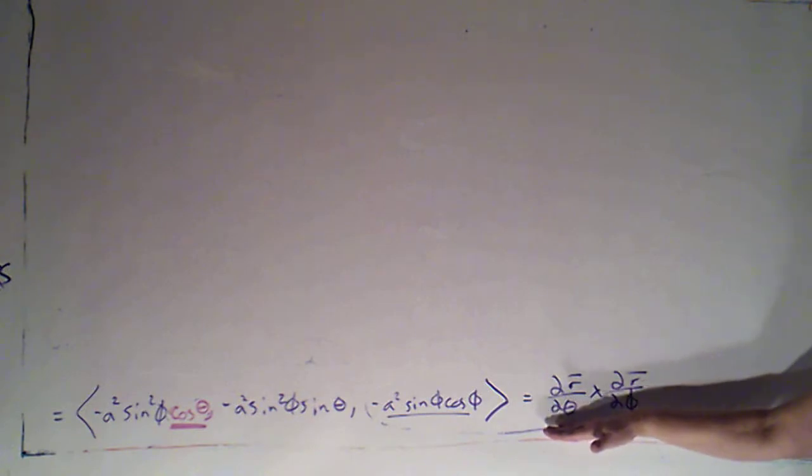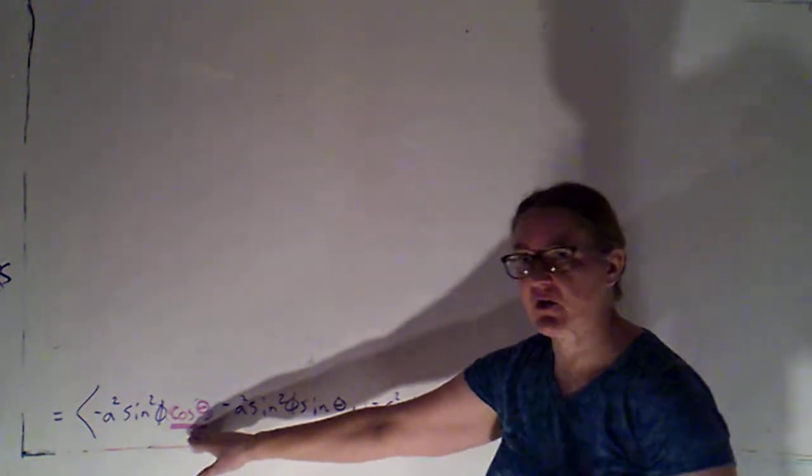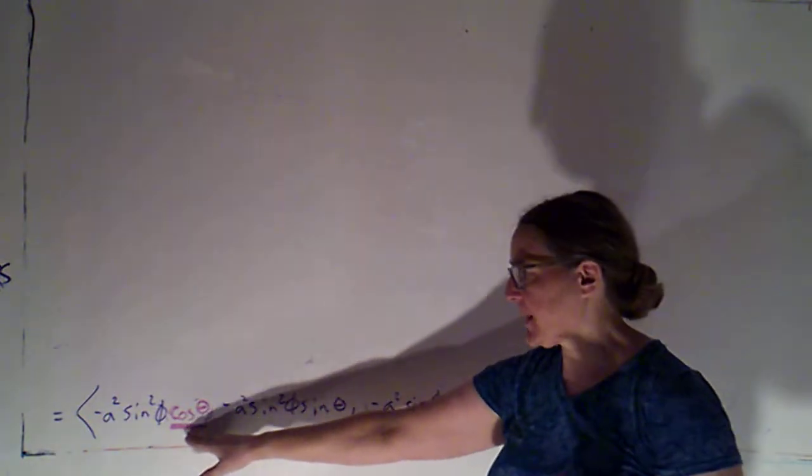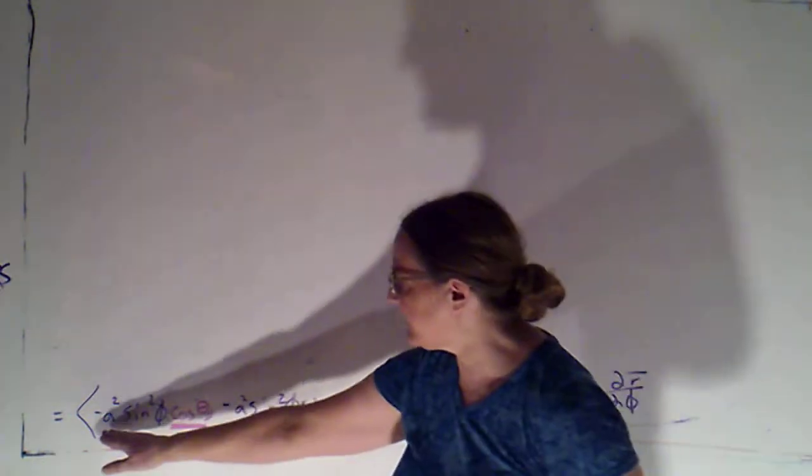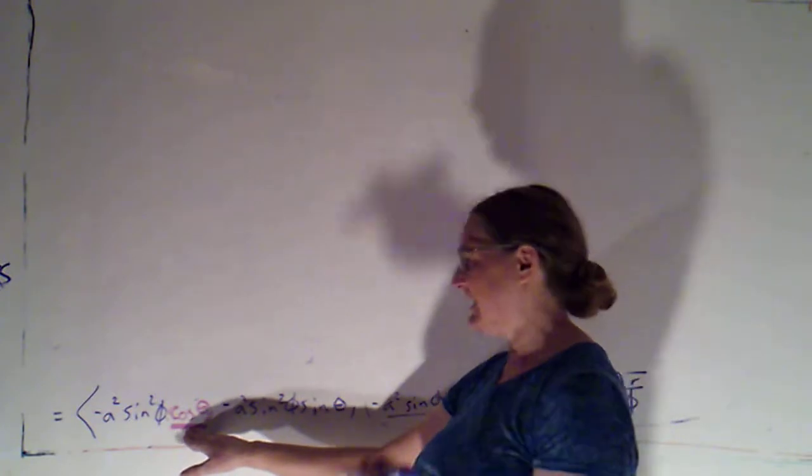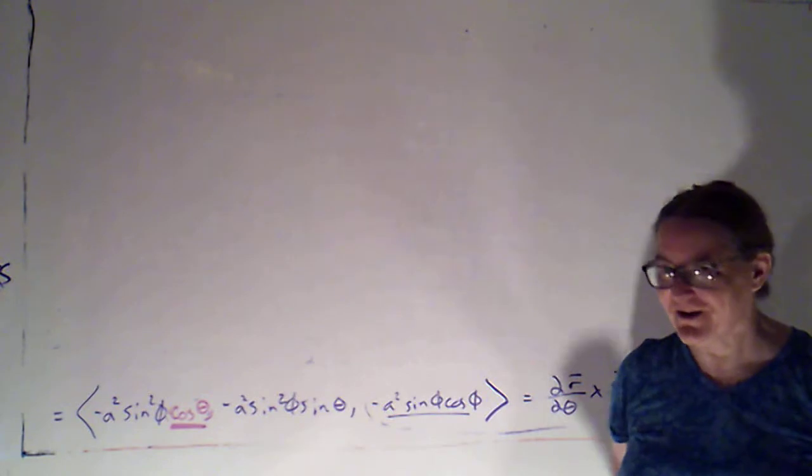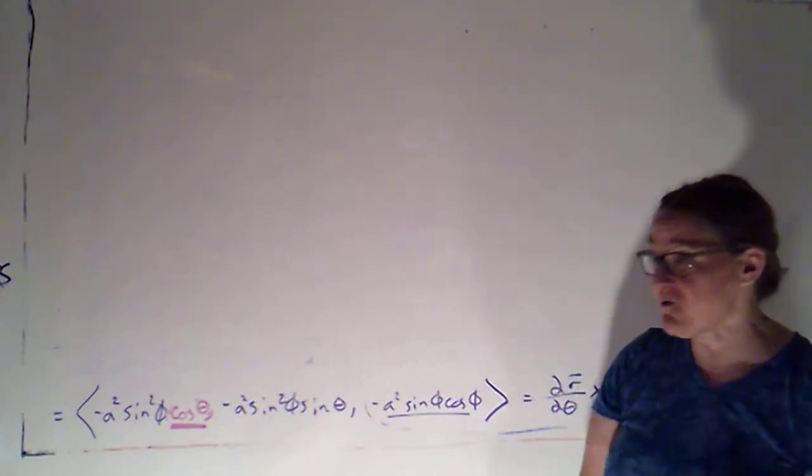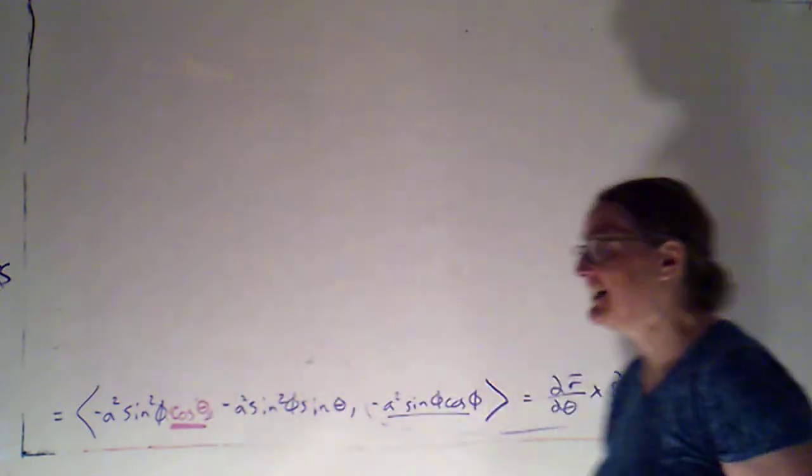Okay, so in the last video we had calculated the cross product of our two partials. Now I had miscopied something, so I inserted a note into that video, but I want to make sure that you caught it. This first component here should be negative a squared sine squared phi cosine theta. I had inadvertently written a sine theta here, so there should have been a little thing that popped up in the video in the last video to point that out. But I want to make sure that if you didn't catch that, you've corrected that. So that's a cosine of theta there.